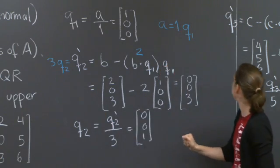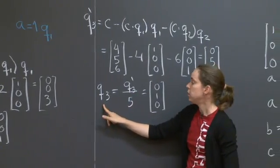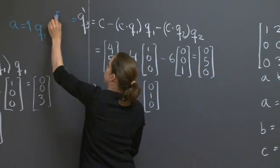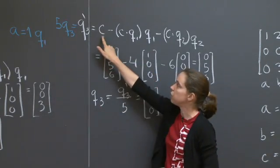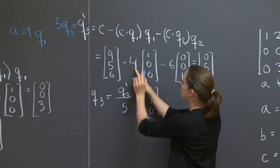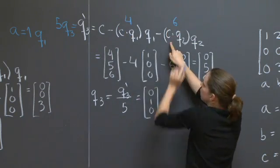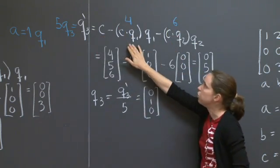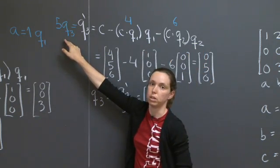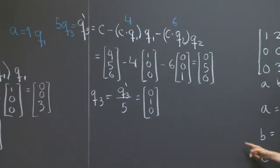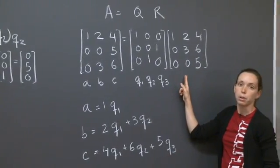Let's check Q3. Q3 prime is equal to 5Q3. So let me write that here. 5Q3. And now I have c is equal to this number was 4 and this number was 6. c is equal to 4Q1 plus 6Q2 plus 5Q3, which indeed is what we wanted. So this is where these numbers from the matrix R are coming from.